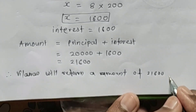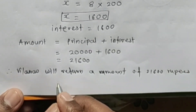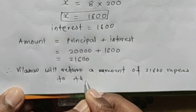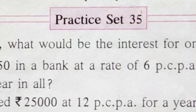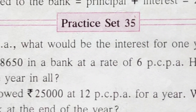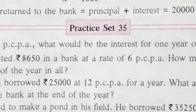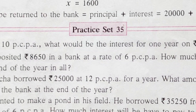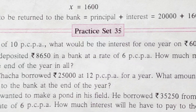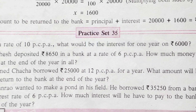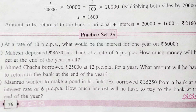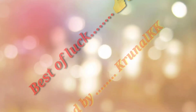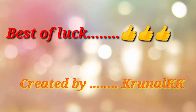So Vilasrao will return a total of 21,600 rupees to the bank. Using this same method, now solve the 4 sums from Practice Set number 35.